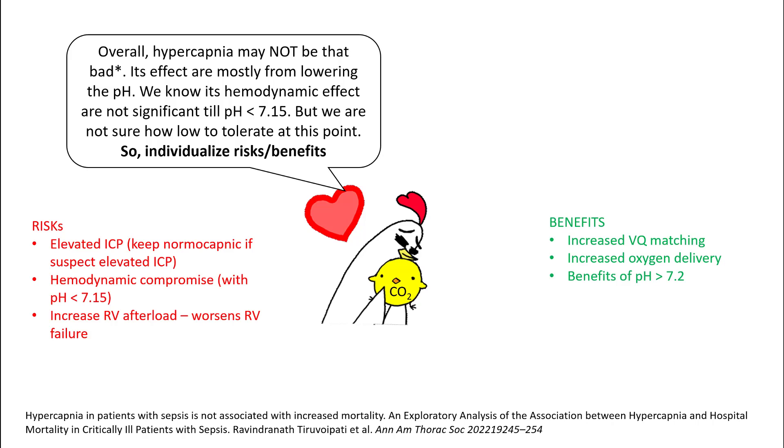The risks of hypercapnia would include elevated ICP. So keep your patient normocapnic if you suspect elevated ICP. It can lead to hemodynamic compromise, especially when the pH is lower than 7.15. You can also increase RV afterload and can worsen RV failure. The benefits of hypercapnia are increased VQ matching and increased oxygen delivery, and the benefits of hypercapnia that we talked about are most visible at pH of 7.2 or higher. So low levels of pH, for example, if your pH is 7.25, is very well tolerated and possibly slightly beneficial for the patient.